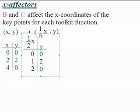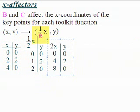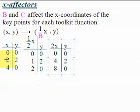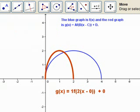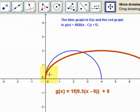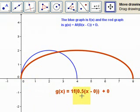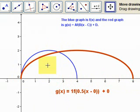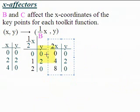If B is one half, then 1 over one half is 2, so all X values are doubled. (2, 2) becomes (4, 2) and (4, 0) becomes (8, 0). Notice the Y values are not affected at all. So B does the opposite of what you think: B equals 2 shrinks horizontally, and B equals one half stretches horizontally.